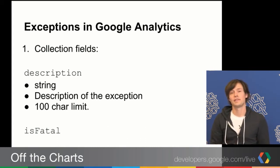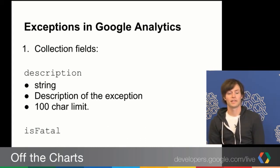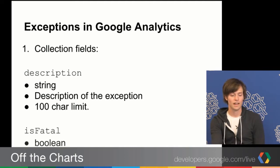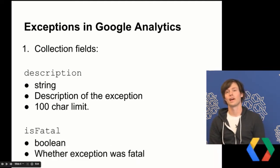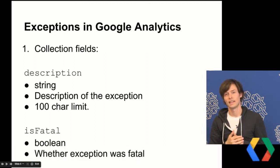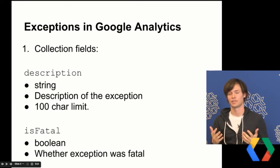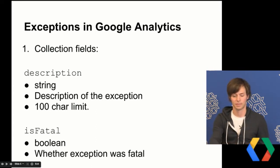The second field you send when measuring an exception is the isFatal field. This is a Boolean that indicates whether or not the exception was fatal — i.e., was it a crash — or whether it was non-fatal, in which case we just call it an exception.